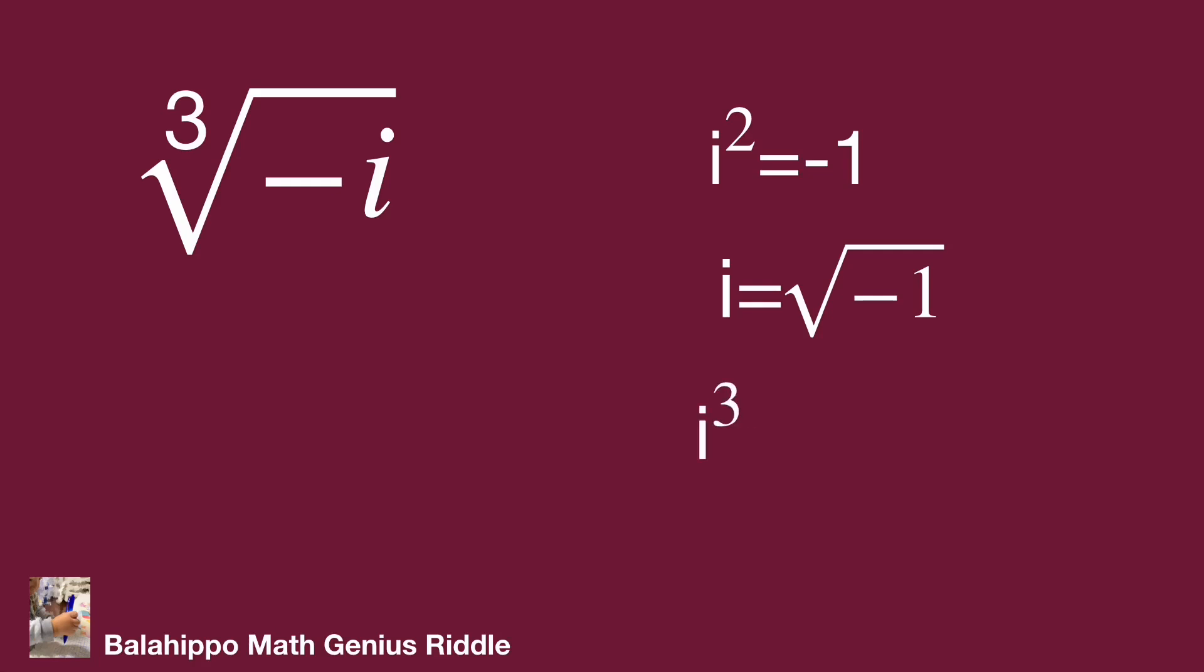Then how about i cubed? It equals i squared times i. i squared equals minus 1, so i cubed equals minus i. Okay, let's keep it.